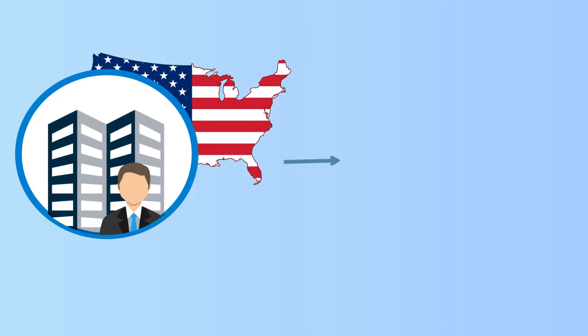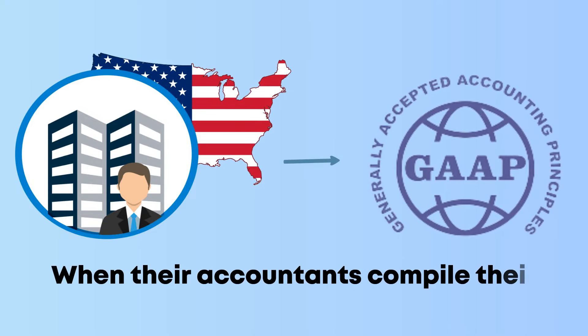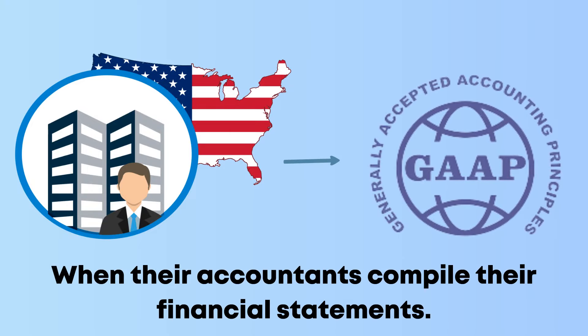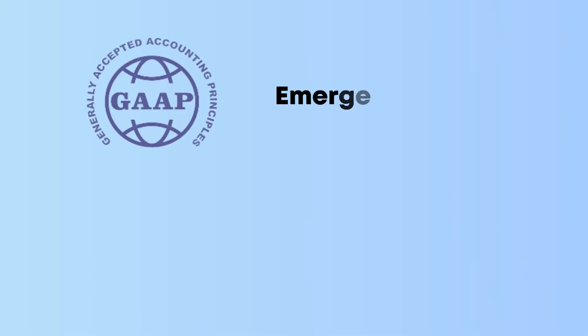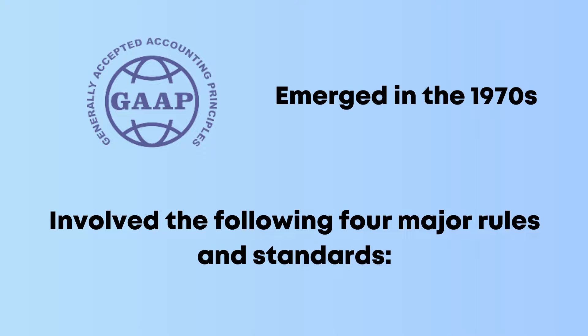Public companies in the US must follow GAAP when their accountants compile their financial statements. GAAP emerged in the 1970s and involved the following four major rules and standards.